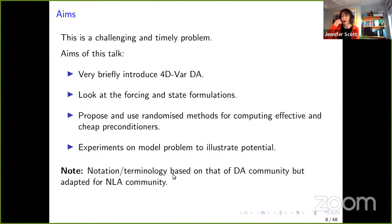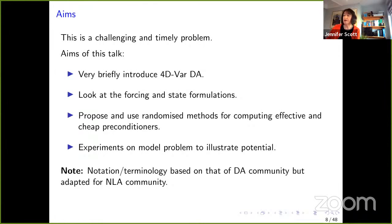At the end of this talk I will have briefly introduced 4DVAR data assimilation, looked at two formulations of the problem called the forcing and the state formulations, looked at using randomized methods for computing preconditioners that are effective as well as cheap to use, and given results on a model problem to illustrate the potential. Some of the notation is based on what's used in the data assimilation community, adapted to be more familiar to the numerical linear algebra community, and I've tried to simplify things as much as possible.